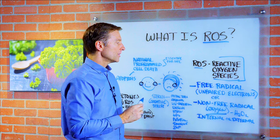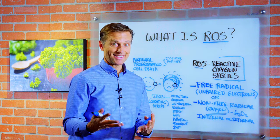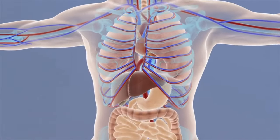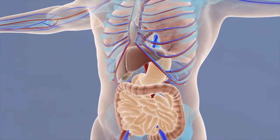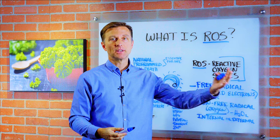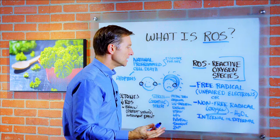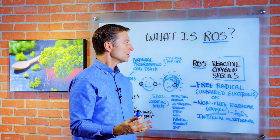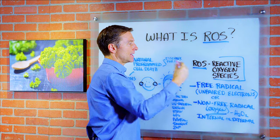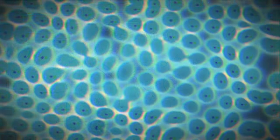So free radicals tend to destroy things. Now the body makes ROS, and ROS can also be generated from the environment coming into the body. But the question is: why would your body make something that's destructive? And understanding this will help you understand what it is.